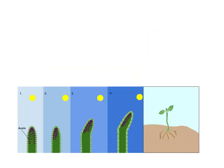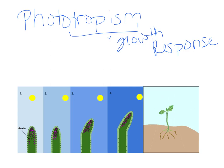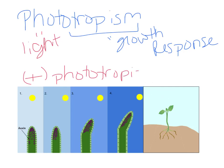The first tropism we're going to talk about is phototropism. A tropism is a growth response. In the case of phototropism, 'photo' refers to light, so the plant is growing in response to light. This is usually a positive phototropism — the plant will almost always grow toward the light. With the increase of auxin on one side, the plant will bend and start to grow towards the light. The benefit is that the plant will be able to do more photosynthesis by absorbing more light, and in turn make more food and more ATP.